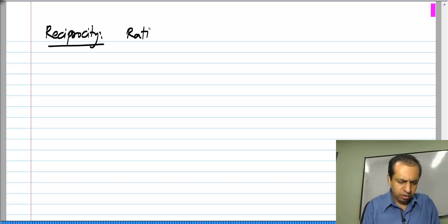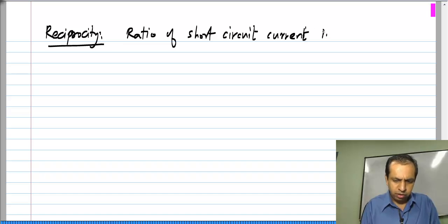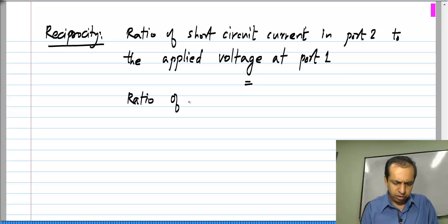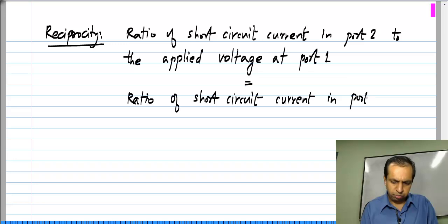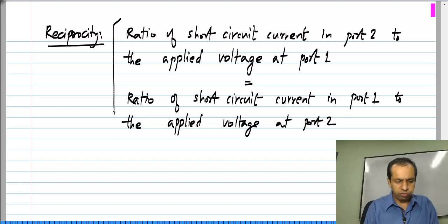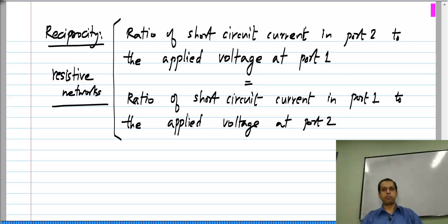Reciprocity means the ratio of short-circuit current in port 2 to the applied voltage at port 1 equals the ratio of short-circuit current in port 1 to the applied voltage at port 2. This is of course true for purely resistive networks. This is one particular statement of reciprocity in terms of short-circuit currents.